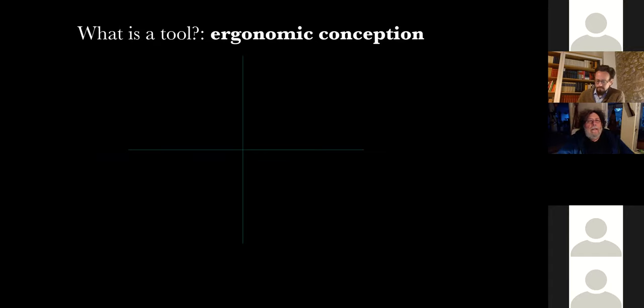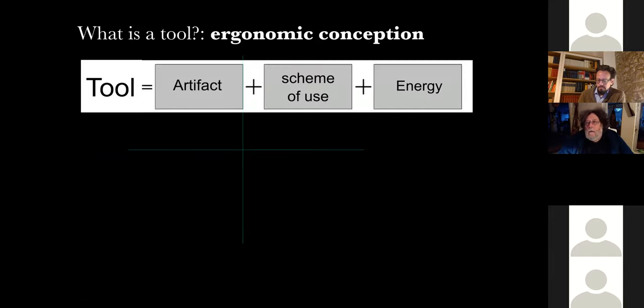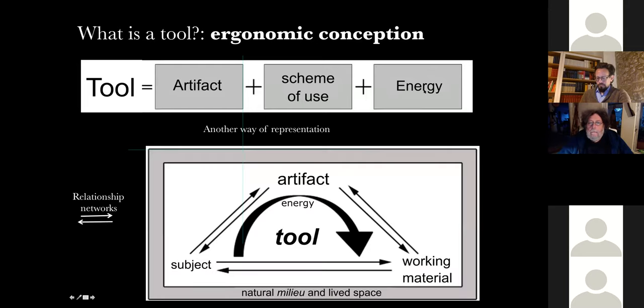Now, the second conception. What is a tool? I don't use artifact. I use, now, tool. And for that, I need an ergonomic conception. For the ergonomic, a tool is not just an artifact. It's an artifact and shell of use and energy. We have artifact, we have subject, we have the working material. And we have a relationship network between artifact, subject, working, and artifact. And all that is in the natural milieu and life space. And we have another constraint: the energy and the action.